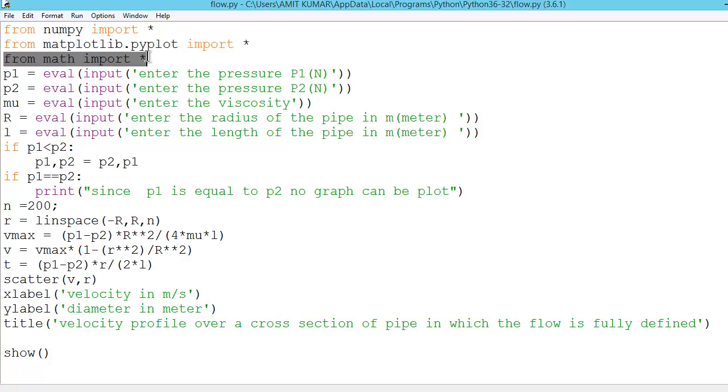So I am not using from math import star. Now the first thing here is written P1. P1 is basically pressure at entering point. So here you will enter the value P1 in newton. Similarly P2 in newton.